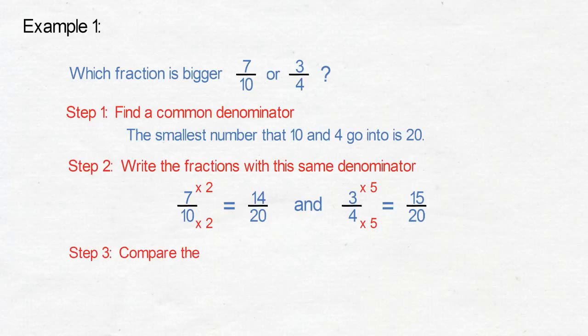Step 3: Compare the numerators. 15 is bigger than 14, so the biggest fraction is 3 quarters.